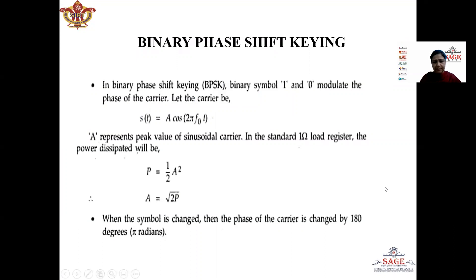Now what is BPSK system? In my previous lecture I have already discussed about binary phase shift keying system. In binary phase shift keying, binary symbols 1 and 0 modulate the phase of the carrier. That means when the message symbol is 1, the carrier signal is given by A cos(2π f₀t), where A is the amplitude and f₀ is the frequency of the carrier. Whereas when the message signal becomes 0, there is a phase shift of 180 degrees, so the carrier is represented as A cos(2π f₀t + π), which equals minus A cos(2π f₀t).